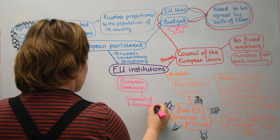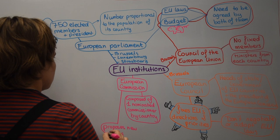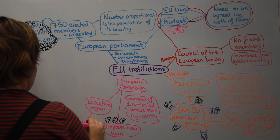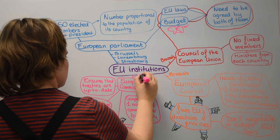Fourthly, we have the European Commission. The commissioners are nominated and there is one commissioner per country. The commission proposes new laws to the parliament and the Council of the EU. The commission ensures that the laws are correctly applied and that the treaties are up to date.